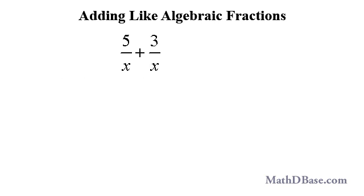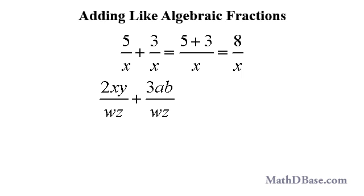For example, 5 over x plus 3 over x is equal to 5 plus 3 over x, which simplifies to 8 over x. 2xy over wz plus 3ab over wz is equal to 2xy plus 3ab all over wz.